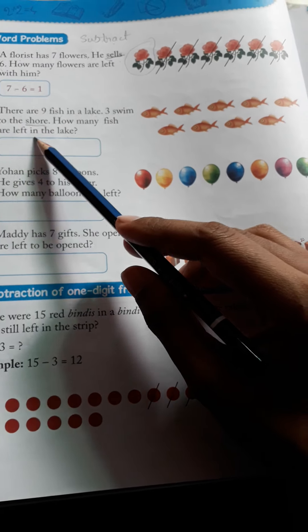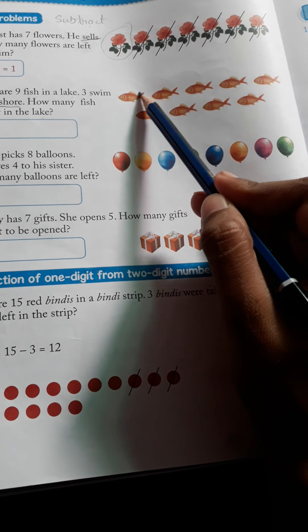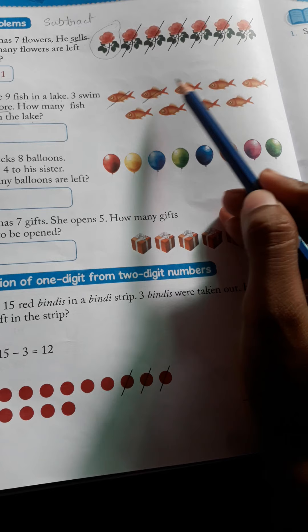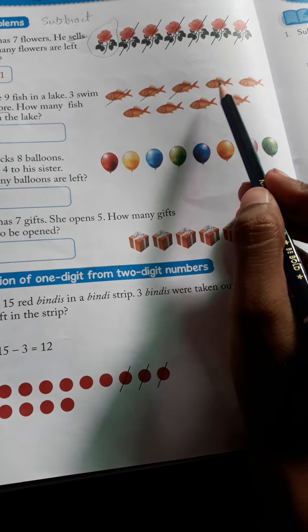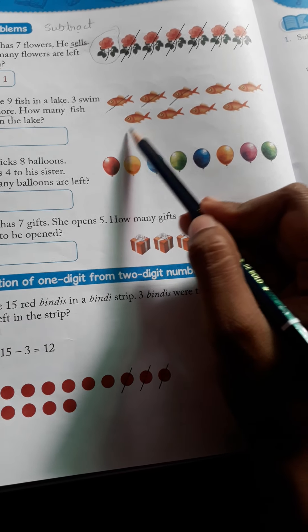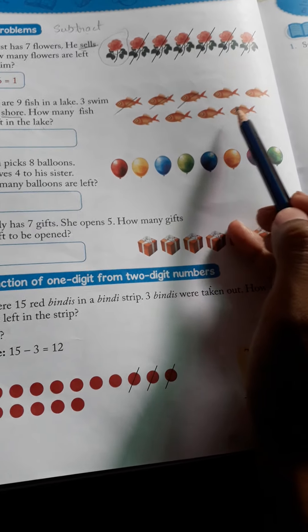And how many come to the shore? 3 fishes. So we will cancel 3: 1, 2, 3. So how many are left? 1, 2, 3, 4, 5, 6 left.